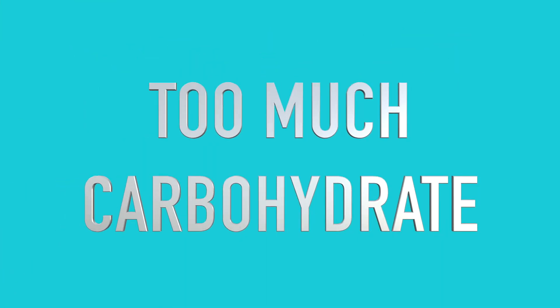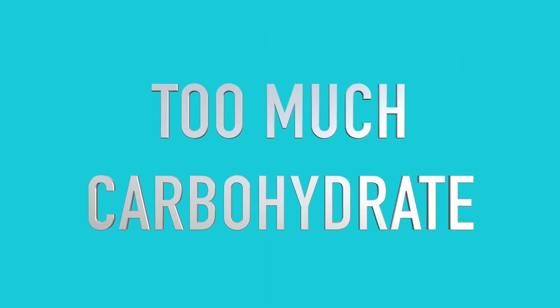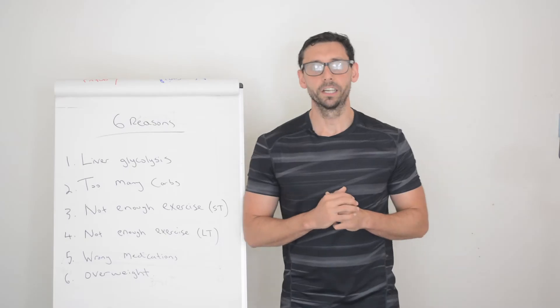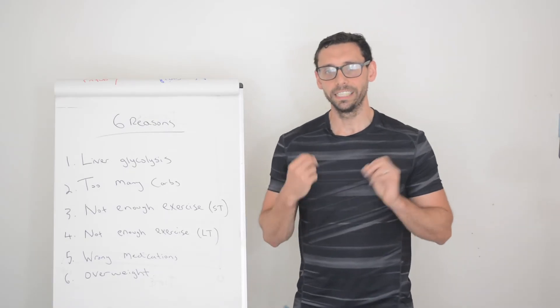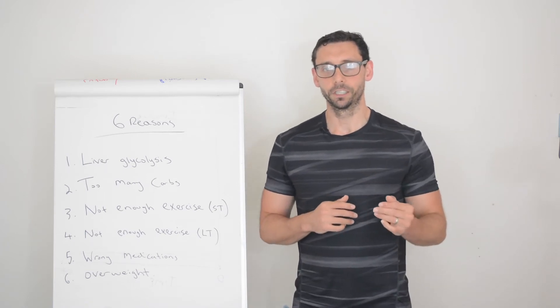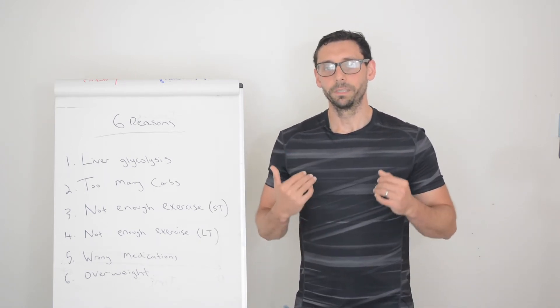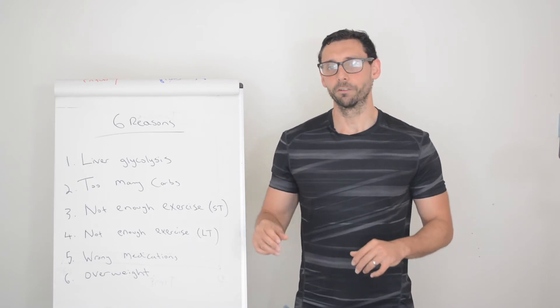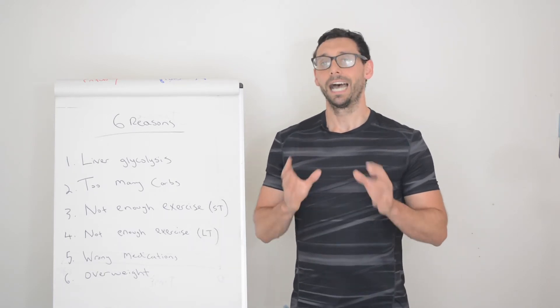Number two, too much carbohydrates. Number two on our list is obviously the types of things that we're eating. We know carbohydrates are the foods that increase blood glucose levels. Does it mean they're bad? Absolutely not. Does it mean someone with type 2 diabetes might have a problem with them if they eat too many? Absolutely.